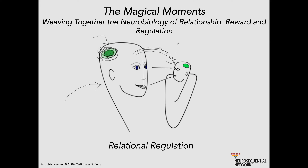These are neural networks that will help this child form and maintain healthy relationships. In previous sessions, we talked about how in this attentive, attuned, responsive interaction from a caregiver early in life, we start to make associations — connections between the neural networks responsible for relationships and the neural networks responsible for reward and pleasure.